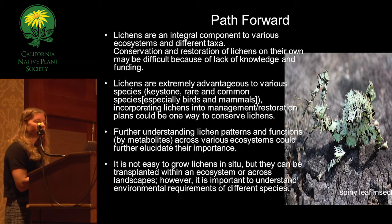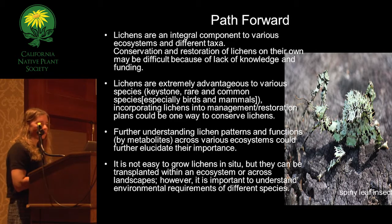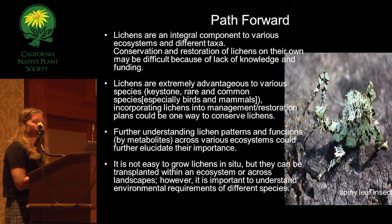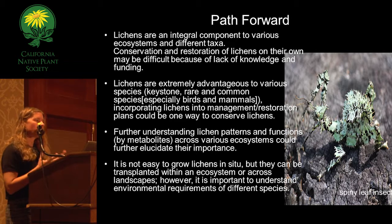It's not easy to grow lichens in vitro — you can't take an alga and a fungus and grow them in a lab; it just hasn't worked yet. However, if we understand a little bit better about species' environmental requirements, we can transplant them. In coastal scrub habitats and oak woodlands where we're destroying them, if we could preserve some of those substrates as well as the lichens that occur there and just move them to new areas, that might be a path forward. Thank you very much.